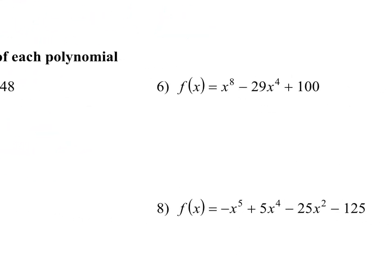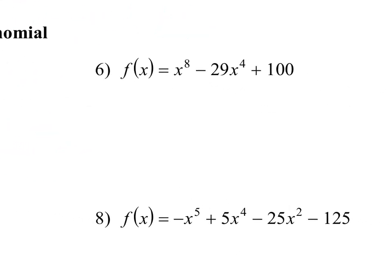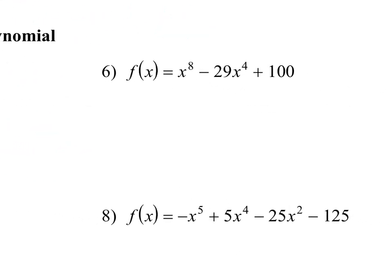Let's go to number six. What term are we looking at here? X to the eight. Is x to the eight positive or negative? Positive. So it's going to end going up. And is it even or odd? Even. So they go in the same direction. So we have up and up again.